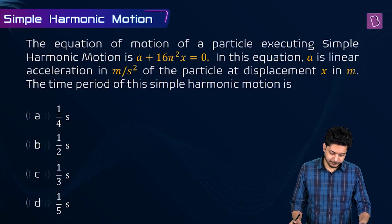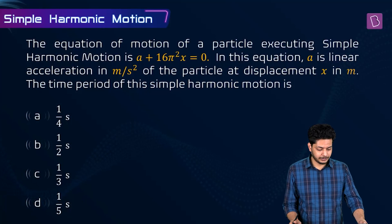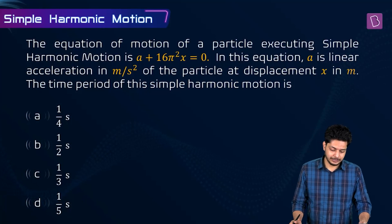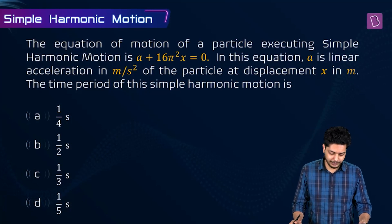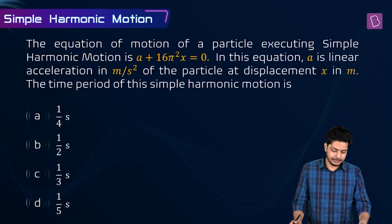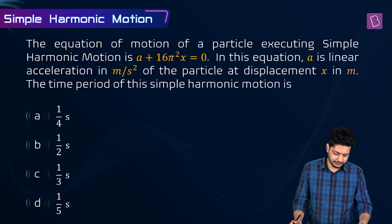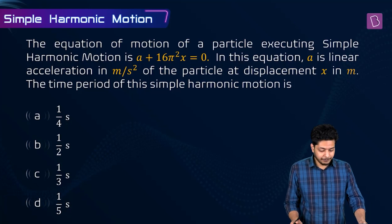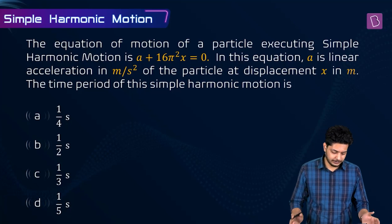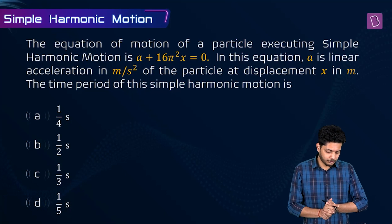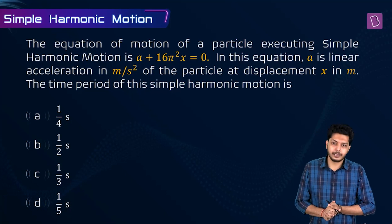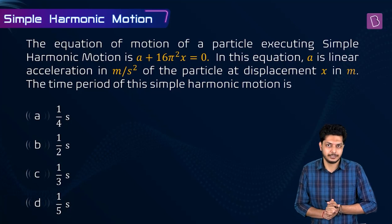The equation of motion of a particle executing simple harmonic motion is a plus 16π²x equals 0. Here, a is linear acceleration in meters per second squared of the particle at displacement x in meters. The time period of this simple harmonic motion is 1/4, 1/2, 1/3, or 1/5 seconds.